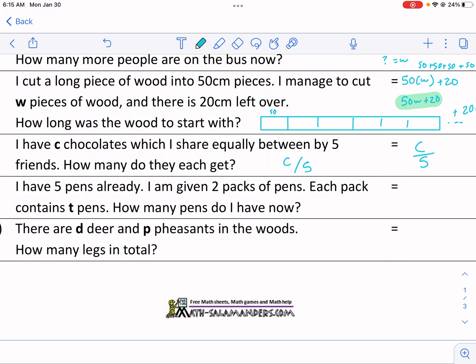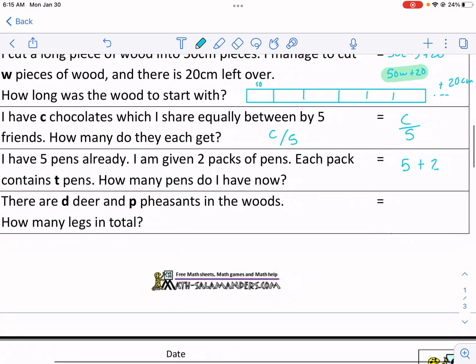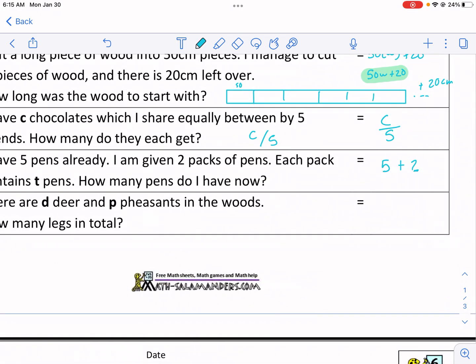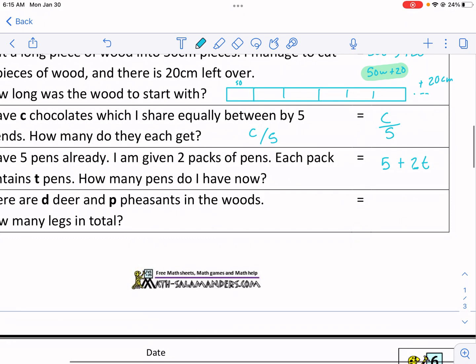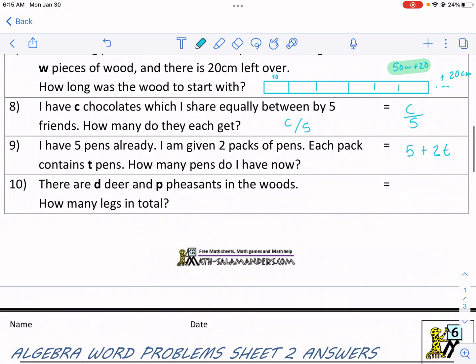I have five pens already. I'm given two packs of pens. Oh, that's nice. Each pack contains T pens. We don't know how many are in each pack. How many pens do I have now? So we have five to start with. And then I'm given, that means plus, I'm going to get more. Two packs of pens. So two. And then each pack contains T pens. So I multiply it. Times T. Just like that. So if each pack contains T amount. Imagine if it was 10. And you had two. It would be 20. You do two times 10 equals 20. Well, we don't know what it is. We don't know it's 10. So we just do two times T. That unknown amount. And then we have the five to start with. So we add it.